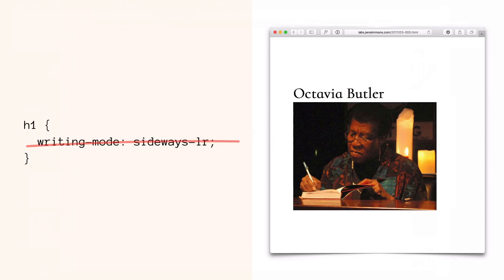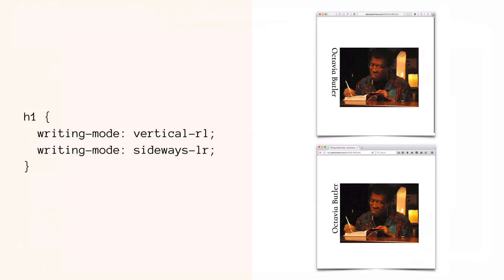We can just pretend like it's not there and maybe it's just going to work out. Or maybe we want to have two different versions — we use vertical-rl for the browsers that understand writing modes and we use sideways-lr for the browsers that understand sideways — and we get two different experiences. The headline turns in one direction for some browsers and the other direction for the others.